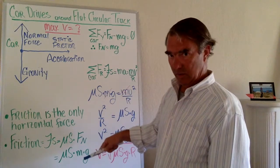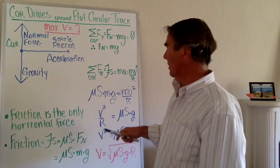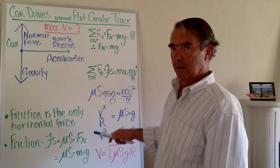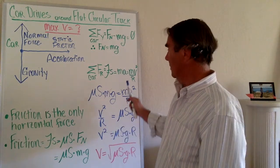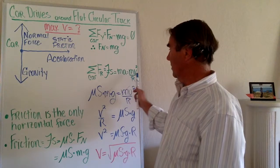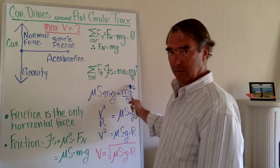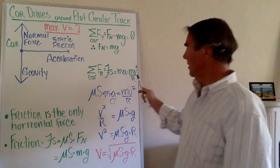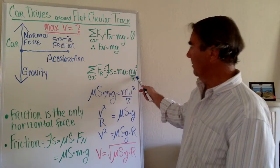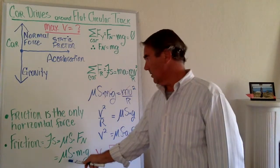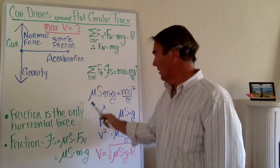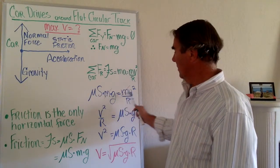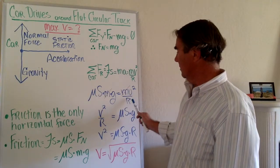The sum of forces in the radial direction is static friction only, and that equals mass times acceleration. In uniform circular motion, mass times acceleration is mv² divided by r. So the force of friction, mu_s mg, equals mv² over r.